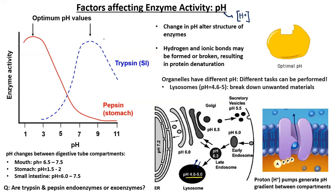On that image, we have two different enzymes which are active at optimal pH values for their activity: trypsin, which is found in the small intestine, and pepsin, which is found in the stomach. In the stomach, the pH is much lower compared to the small intestine. Evolution has occurred such that we have those enzymes that are optimal at different pH values. It's interesting with respect to the digestive tube, because we're secreting those substances into the tube. That brings up the question: are trypsin and pepsin endoenzymes or exoenzymes? Something to think about, also mentioned in your lab activity.